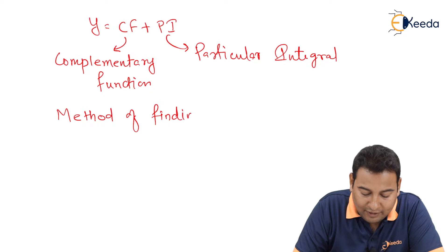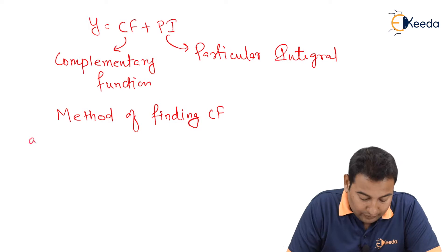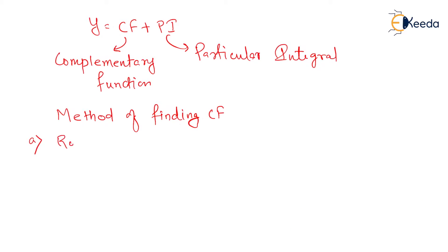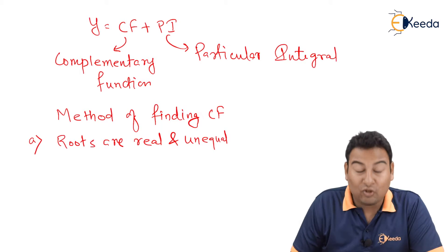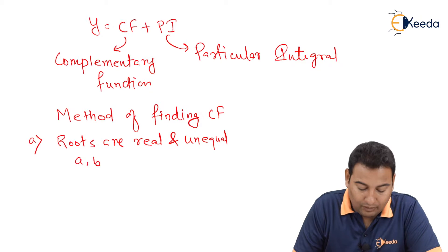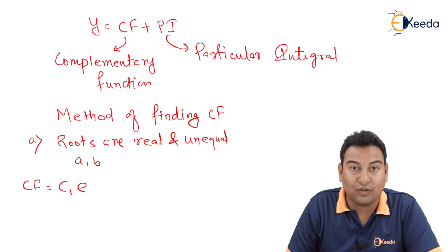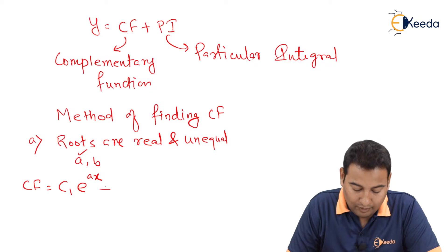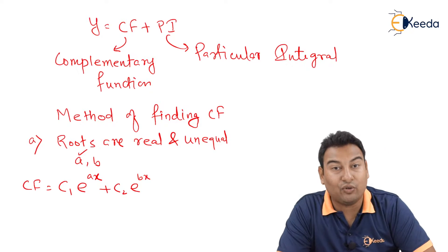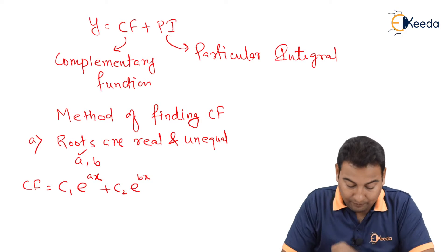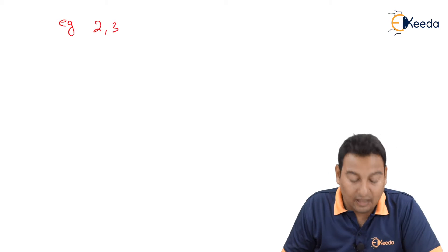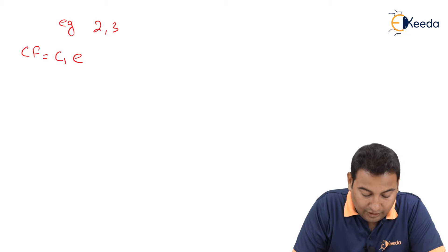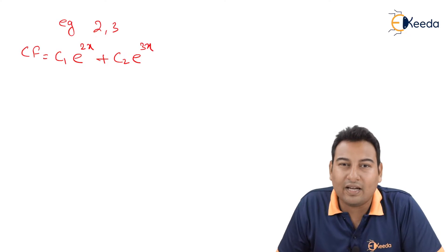First, let's talk about the method of finding CF — the complementary function. CF is very easy. There are three possibilities. The first possibility is when the roots are real and unequal, for example, roots a and b. In this case, CF will be written as c1·e^(ax) + c2·e^(bx). For example, if the roots are 2 and 3, then CF = c1·e^(2x) + c2·e^(3x).